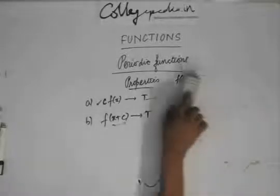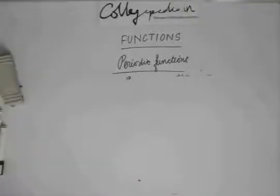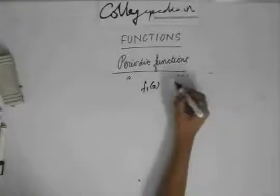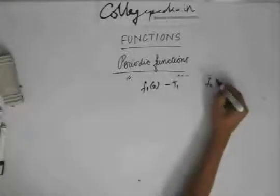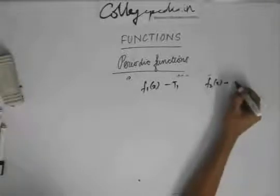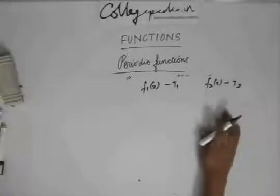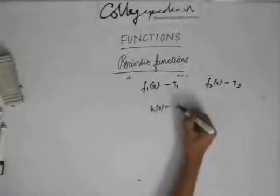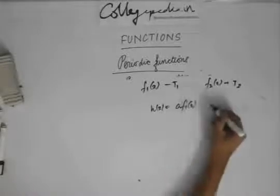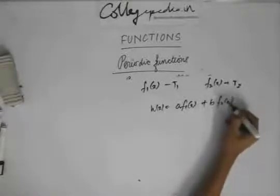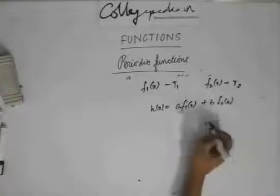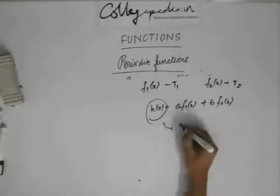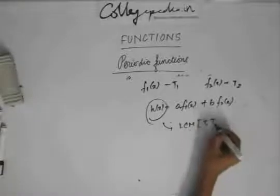Those were some properties of periodic functions. Now, if f₁(x) has period t₁ and f₂(x) has period t₂, then the function h(x) = a·f₁(x) + b·f₂(x) has period equal to the LCM of t₁ and t₂.